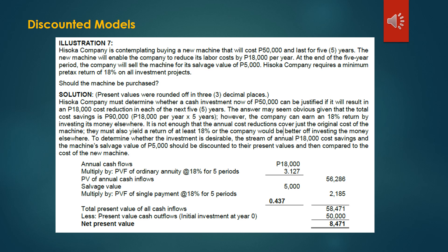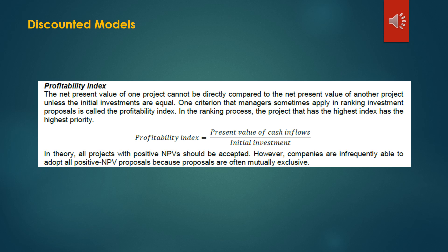We could say that this machine should be purchased because the cash inflows are higher than the cash outflows. For our final discounted technique, we have the Profitability Index. The net present value of one project cannot be directly compared to the net present value of another project unless the initial investments are equal. One criterion that managers sometimes apply in ranking investment proposals is called the Profitability Index. In the ranking process, the project with the highest index has the highest priority. This is solved by: Present Value of Cash Inflows ÷ Initial Investment.